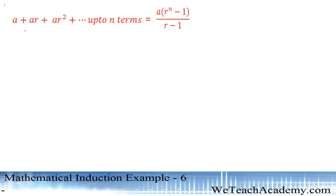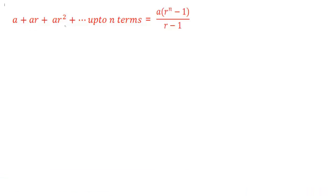So let us prove that a plus ar plus ar squared, and so on up to n terms, is equal to a into r to the power n minus one, divided by r minus one.